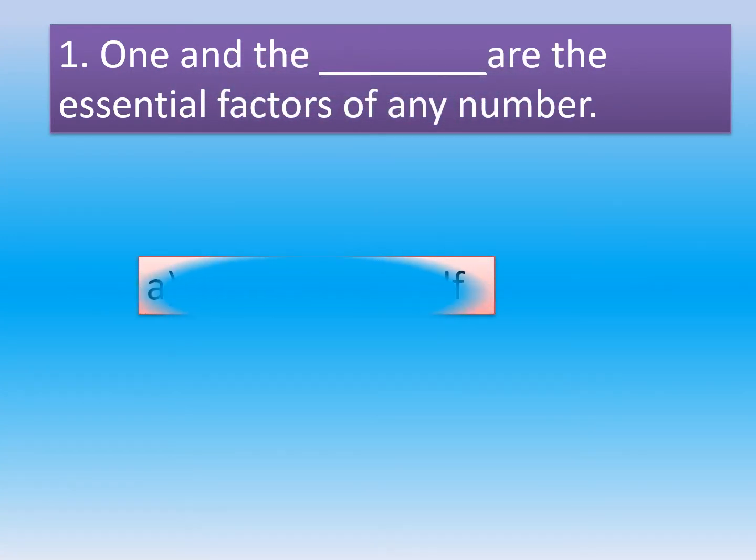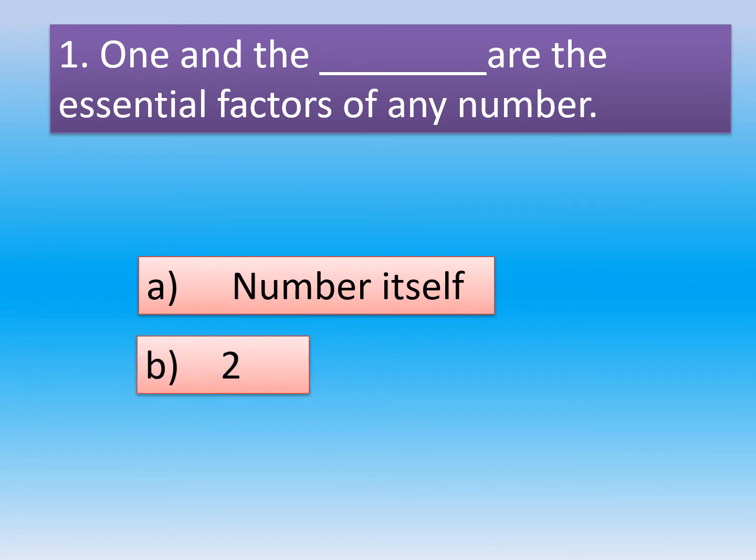Question 1. One and the dash are the important factors of any number. Option A, number itself. Option B, 2.